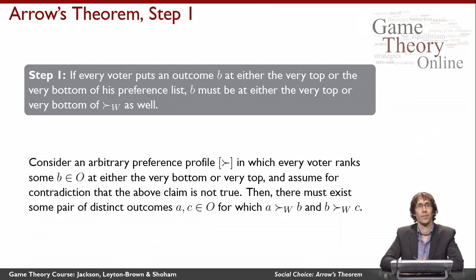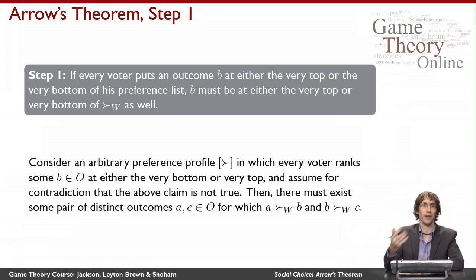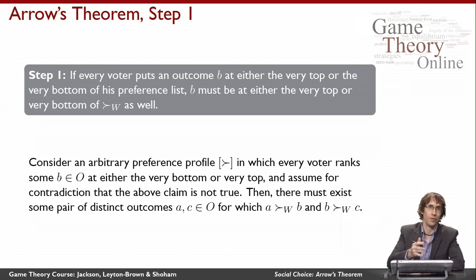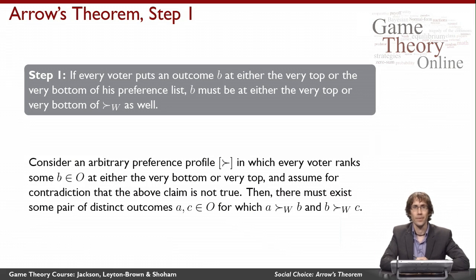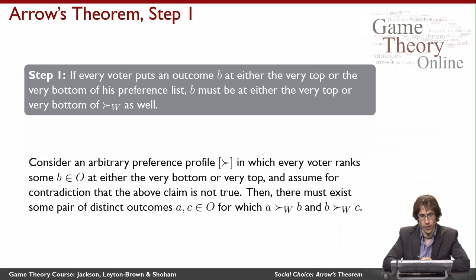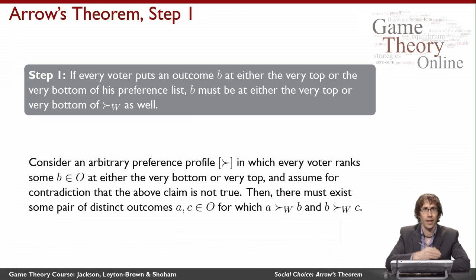We're going to proceed in four steps, proving four intermediate claims that will eventually get us to the conclusion that this social welfare function — which we assume is both Pareto efficient and IIA — must also be dictatorial. Here's the first claim, which sounds strange but will get us where we want to go: if every voter ranks some outcome B either at the very top or the very bottom of his preferences, then the social welfare function must also put B either at the very top or the very bottom.